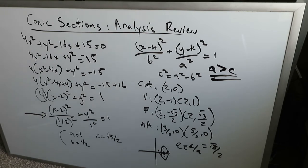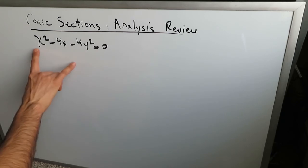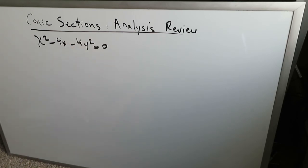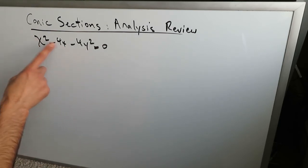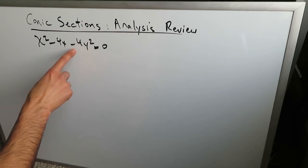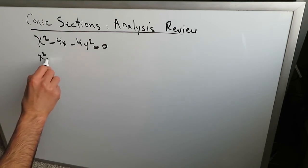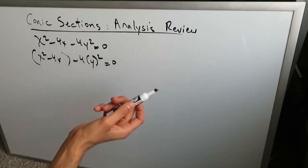Let's look at our last conic section — the hyperbola. When you're looking at x-squared and y-squared components with a minus sign in between, you should be thinking about a hyperbola. Circles and ellipses both have positive x-squared and positive y-squared. But in a hyperbola, you have one positive and one minus. That minus sign is what you're seeing here. When looking at this equation, you should always be thinking about completing the square.